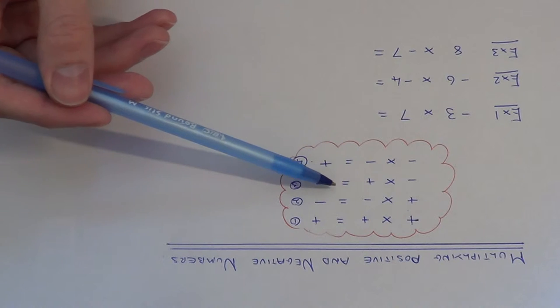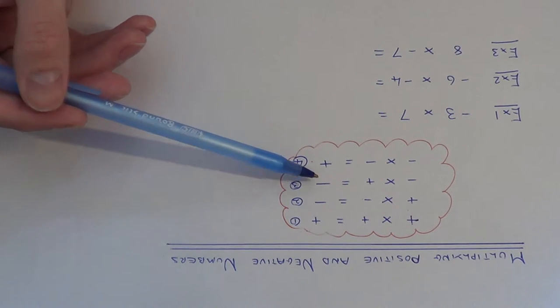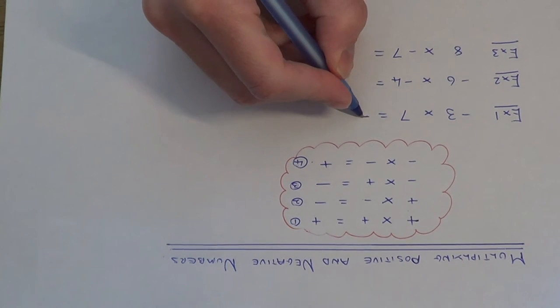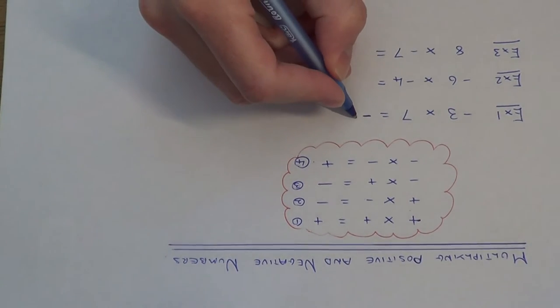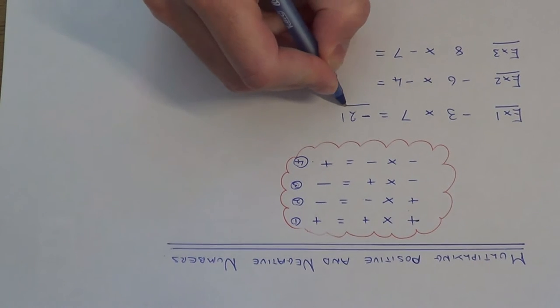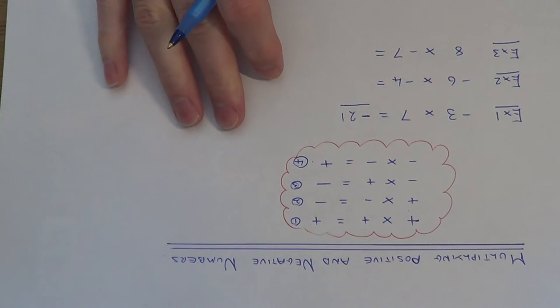A negative times a positive gives us a negative answer. All we need to do now is work out three times seven, which is 21. So our final answer is minus 21.